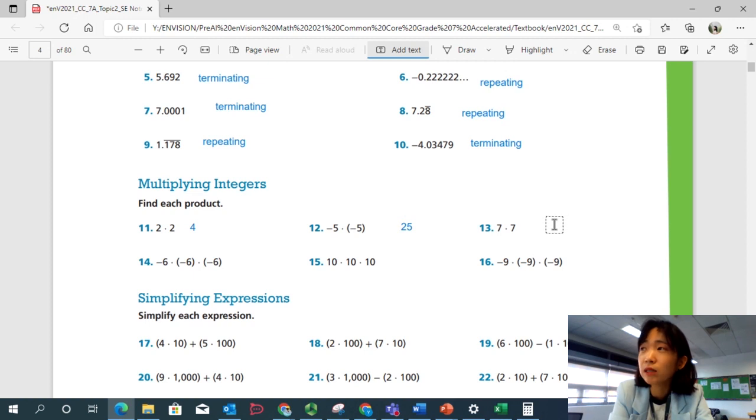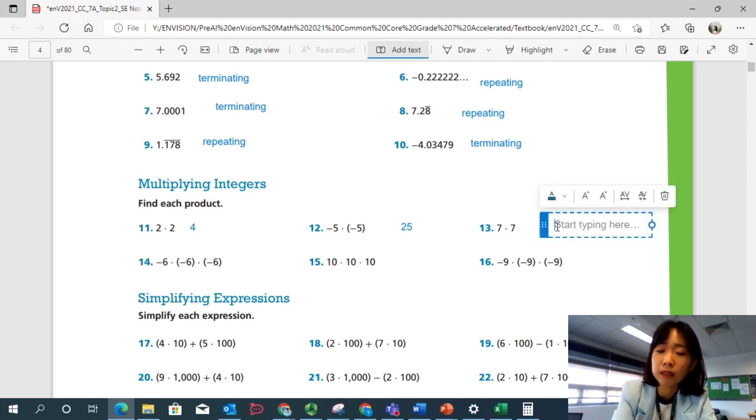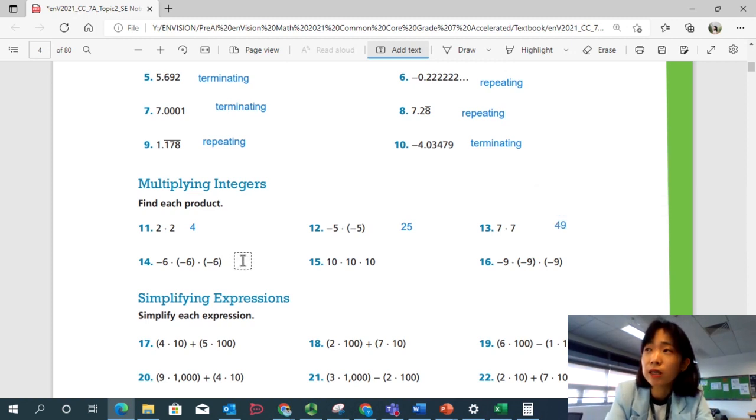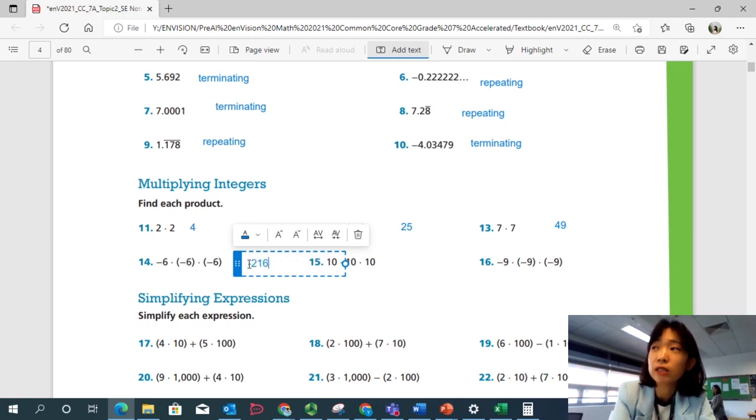Number 13. 7 times 7 is 49. What about negative 6 times negative 6 times negative 6? You multiply negative and then negative. It cancel out. It becomes positive. But positive times a negative is a negative. So 6 times 6 times 6 would be 216. But it's a negative 216.